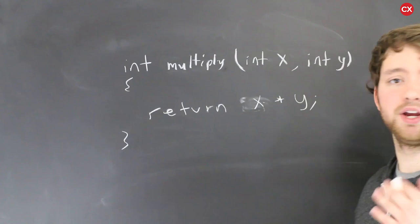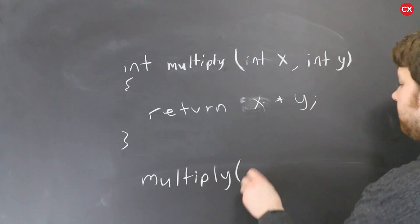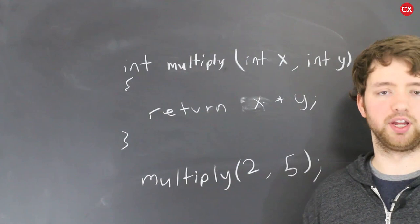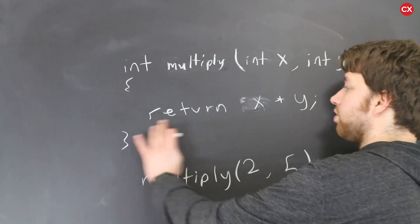How would we call this? It would look like this. In some other function elsewhere we might need to multiply two numbers. What we could do is we could just say multiply and then pass in two and five for example. Obviously this is kind of a useless example because you could literally just do what we just did there. But this is just to explain the concepts of arguments and parameters and whatnot.